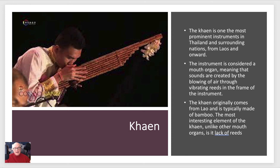The khaen is one of the most prominent instruments in Thailand and surrounding nations like Laos. The instrument is considered a mouth organ — we can trace this probably all the way back to pan pipes, to Greek water organs, and probably all the way back to Africa and Egypt especially. It's unique in that there are no reeds in it; the sound has to do with the position of the mouth and the shape, length, and size of the bamboo pipes. It has a very unique sound and is definitely one of the characteristics of Thai music.